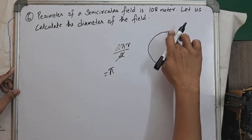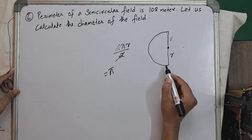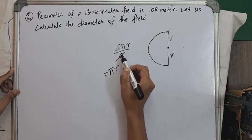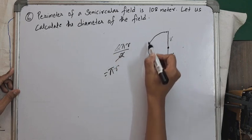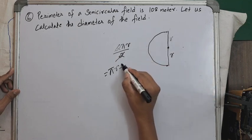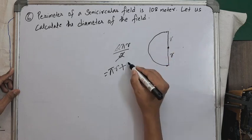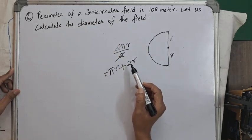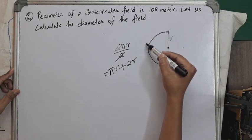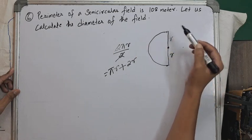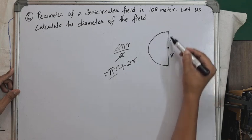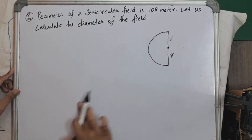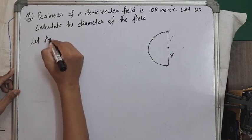So the length of the curved part of the semicircle is πr. The perimeter of a semicircle equals the length of the curved part plus the length of the diameter: πr + 2r.